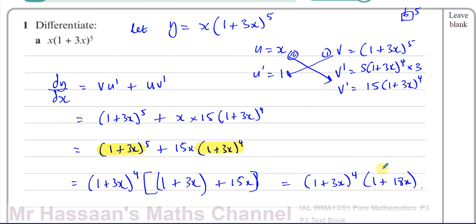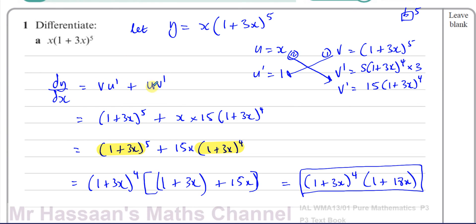The textbook answer probably says (18x + 1), but there's no difference between (1 + 18x) and (18x + 1). The difference in ordering comes from using u·v' + v·u' versus v·u' + u·v' — either way the final answer is exactly the same. So that completes part A. The key steps are: identify the two products, differentiate each separately using the chain rule where needed, apply the product rule formula, then factorize your answer to match the required form.